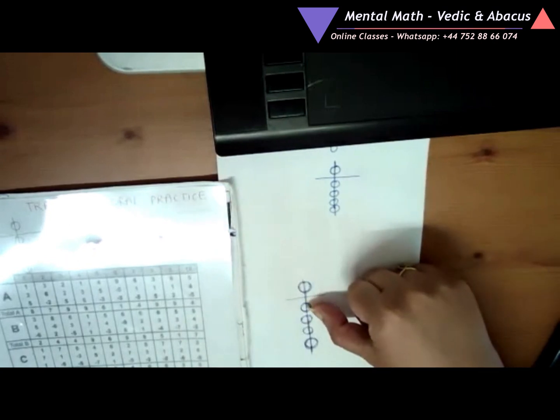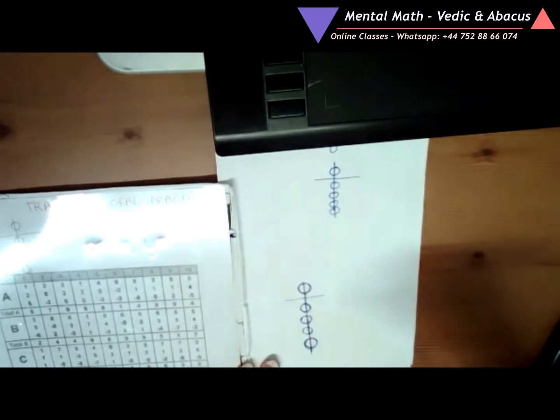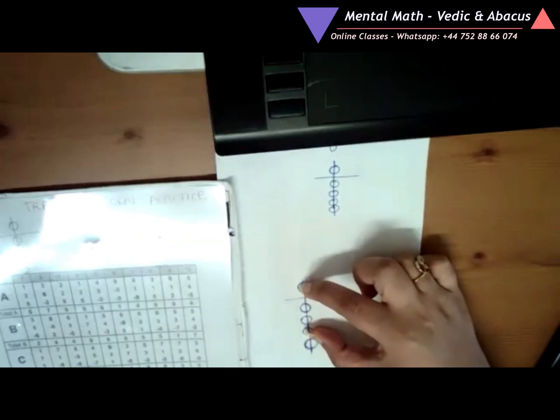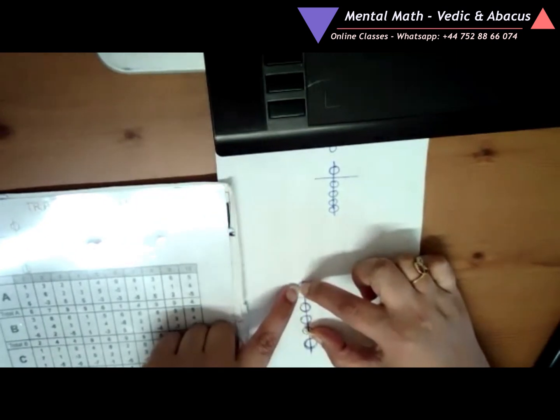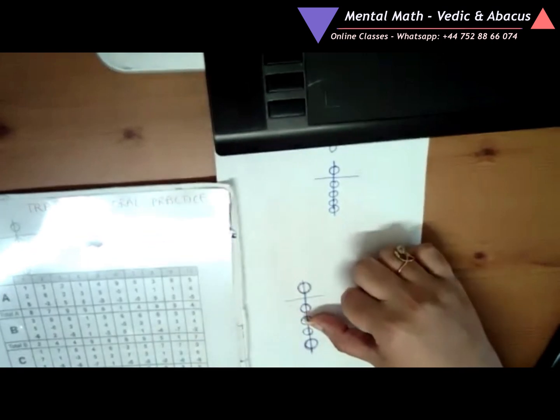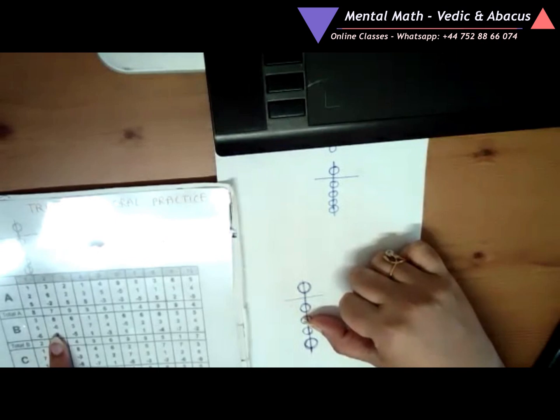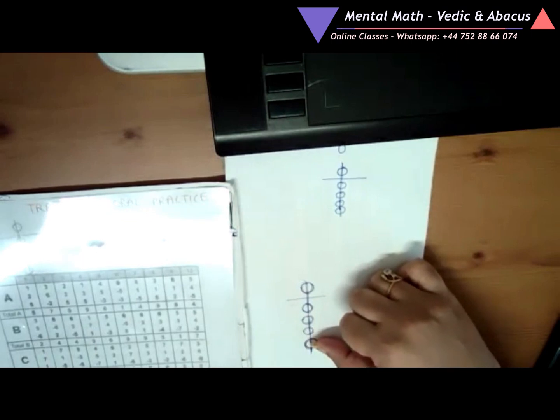Let's do one more question. 8, so 5 plus 3 makes 8. Minus 6, so minus 6 is 1 bead from the top and 1 bead from the bottom. So move your thumb 1 bead up. 8 minus 6, plus 2. So add the remaining 2 beads. Answer is 4.